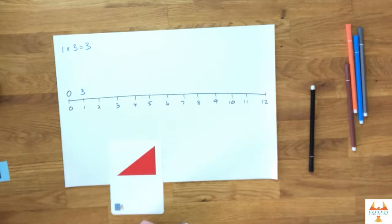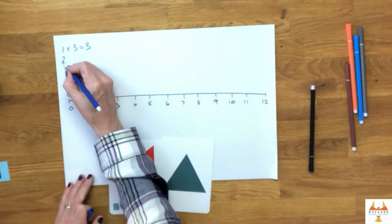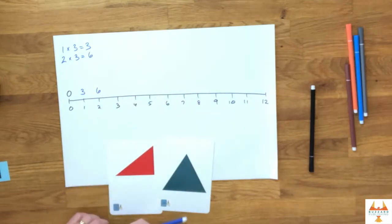Now if we've got two triangles, we can see we've doubled the number of sides we've got as we've doubled the number of triangles. So two times three equals six. Pop that on the line there.